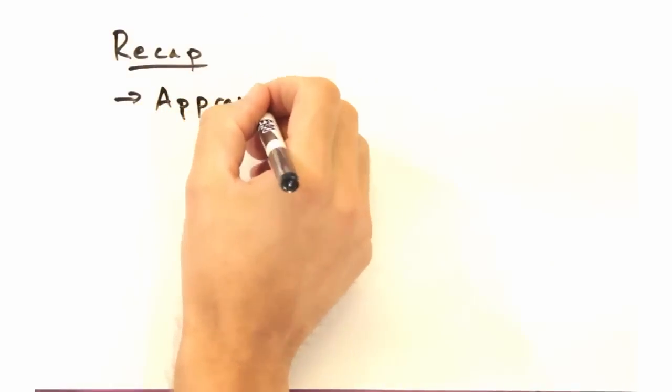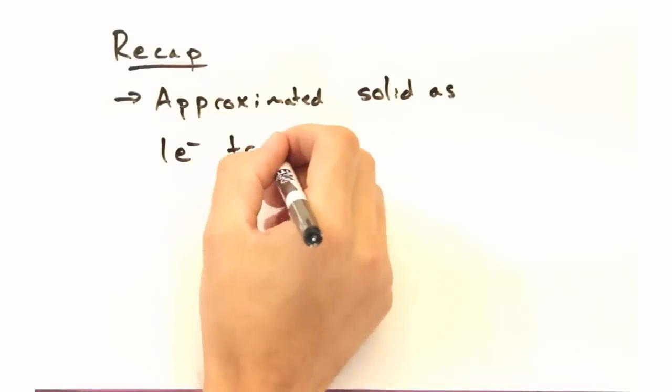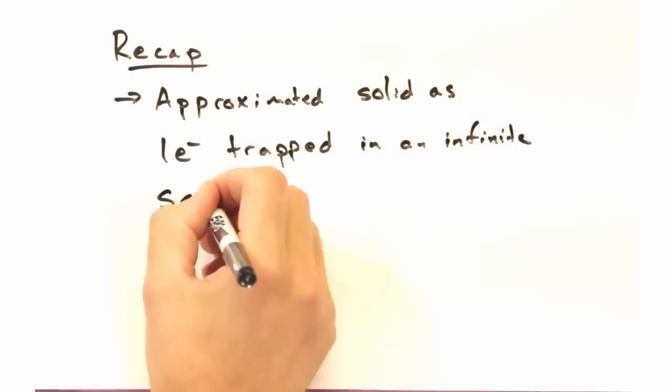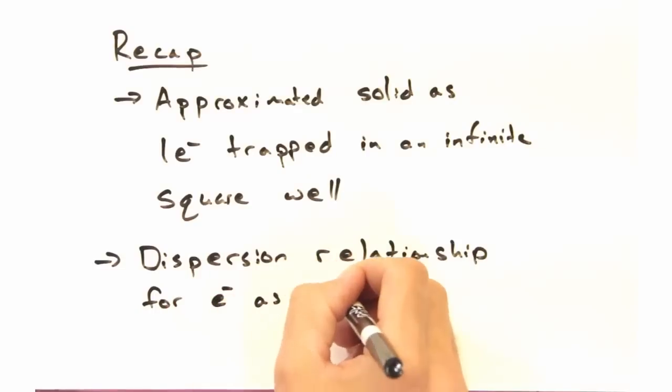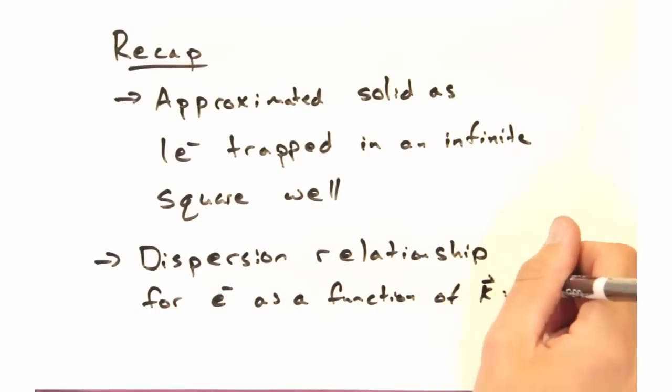So while the k space looks different for the different approaches, they are consistent in terms of the number of electronic states. So it looks like it's about time to do a recap. We began today by approximating our system as one electron trapped in an infinite square well.